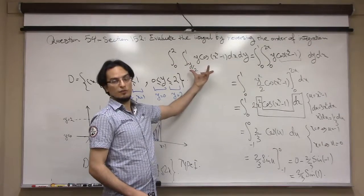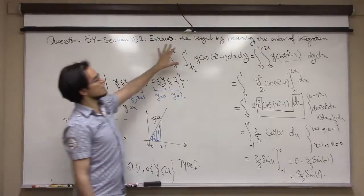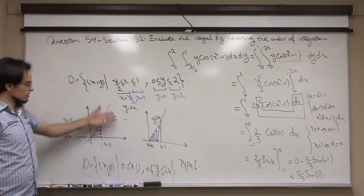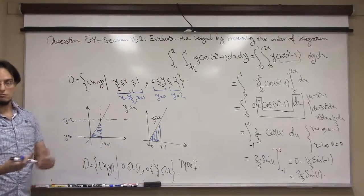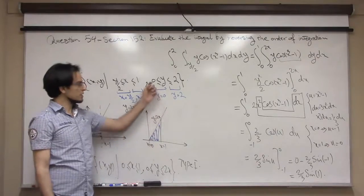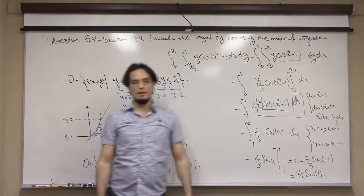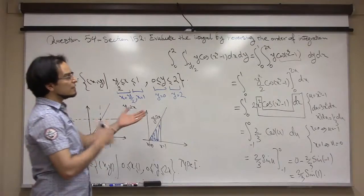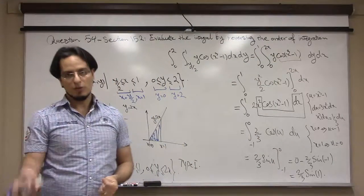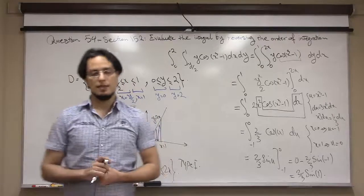A quick wrap-up: to change the order of integration, first write down your region using the integral boundaries, then sketch it by drawing the boundary lines. Change the type of region — in this case from type 2 to type 1 — rewrite the integral, then evaluate the iterated integral by doing the inner integral first, then the outer. The final value is (2/3) sin(1). Thank you for watching.